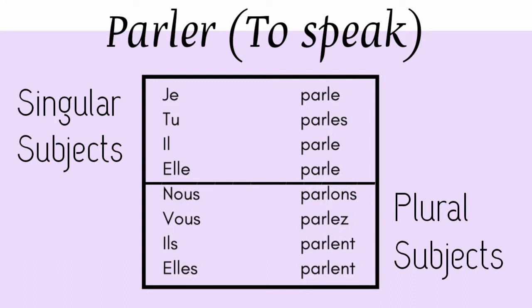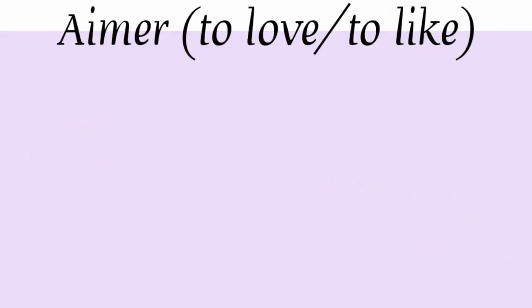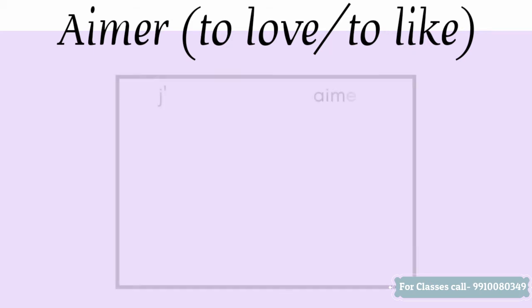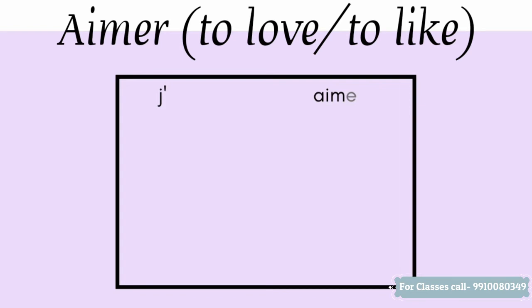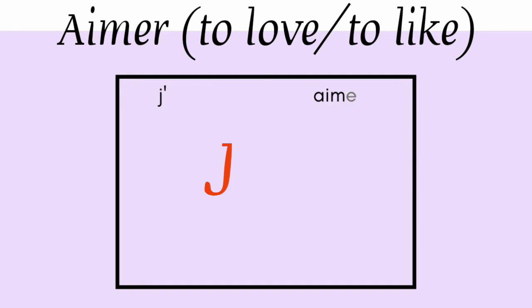Let's try one more verb which is aimer. I'll tell you one rule here: aimer starts with a vowel. Aimer means 'to love' or 'to like.' So when we conjugate this verb with je, we have to put an apostrophe after j', so the E of je is removed and an apostrophe is added. So it will look like j'aime.